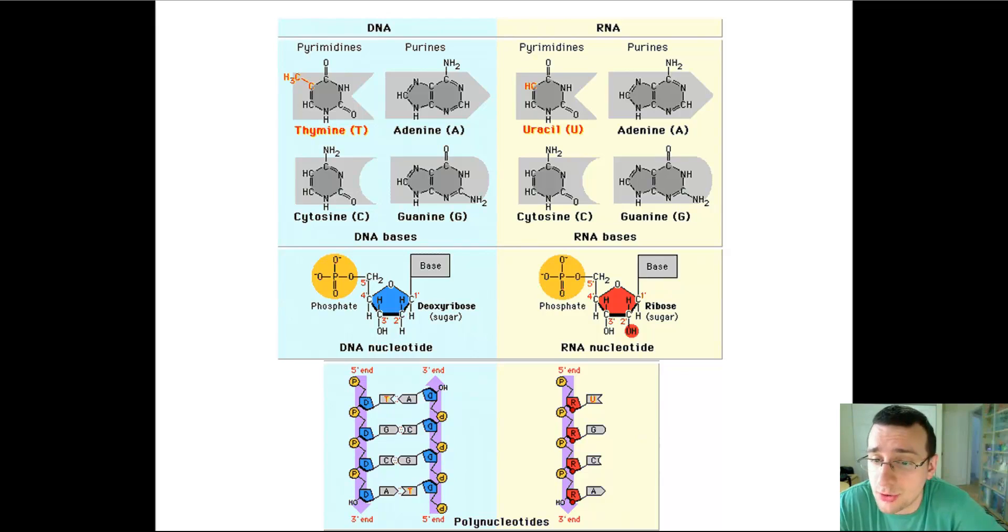But the structure is going to be different in some ways. The nucleotide structure is the same - it's a phosphate, a sugar, and a base. But the sugar is going to be different. In RNA, the sugar is ribose, and in DNA, it's deoxyribose, which has one less oxygen in the carbon-2 of the sugar.